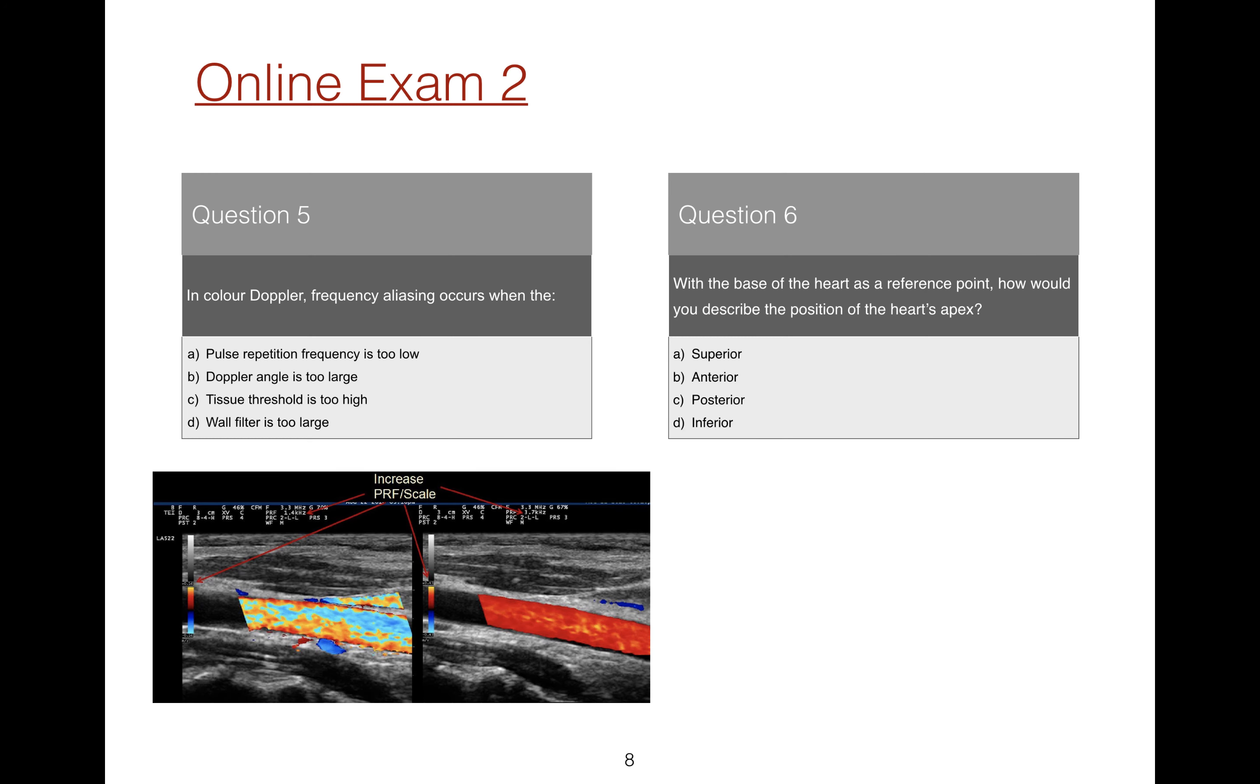Question 6: With the base of the heart as a reference point, how would you describe the position of the heart's apex? The base of the heart refers to the heart's upper border, while the apex to its lowest point. So, with reference to the base of the heart, the apex is inferior.